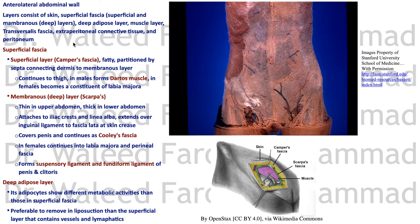After the skin we have the superficial fascia, composed of a fatty layer resting upon a membranous layer. This membranous layer becomes very evident in the lower part of the abdominal wall. The fatty superficial layer is called Camper's fascia — it's fatty and partitioned by septa extending from the dermis to the membranous layer. It's continuous to the thigh, and in males it forms the dartos muscle on the genitals, supplied by sympathetic fibers. In females it is a constituent of the labia majora.